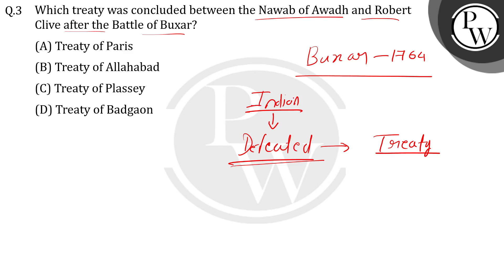But after this defeat, Mir Qasim seems to have disappeared — there is not much information available about him in history; he became untraceable.